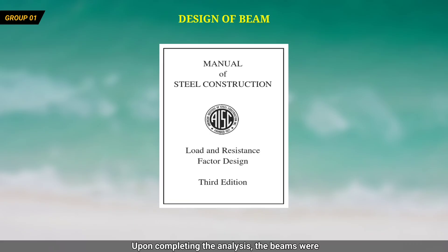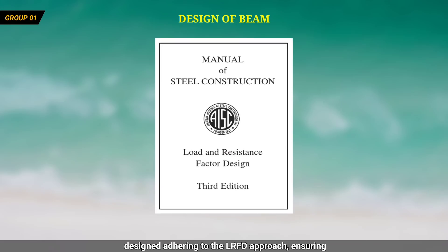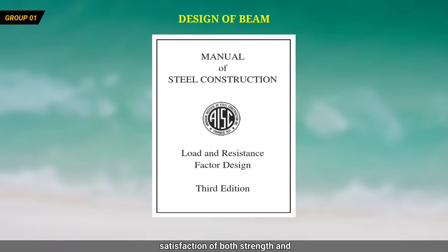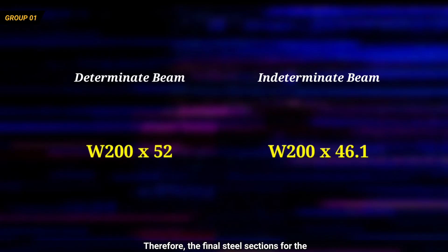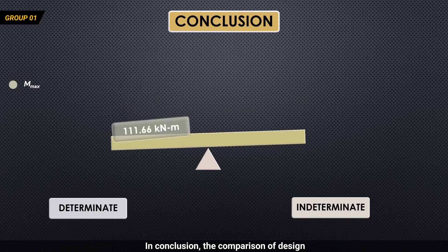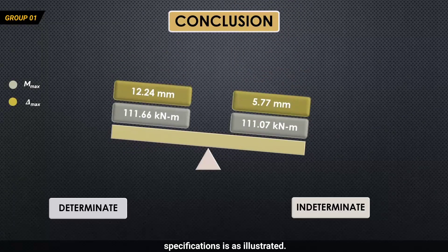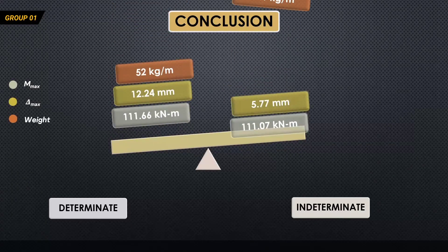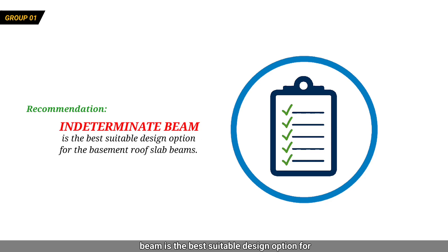Upon completing the analysis, the beams were designed adhering to the LRFD approach, ensuring satisfaction of both strength and serviceability limit states. Therefore, the final steel sections for the beams in both options come out to be as shown. In conclusion, the comparison of design specifications is as illustrated, and we may recommend that the indeterminate beam is the best suitable design option for the basement roof slab.